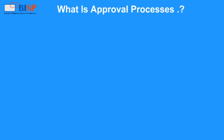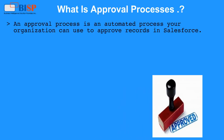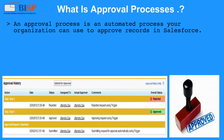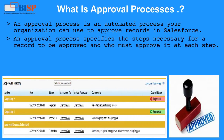What is an approval process? An approval process is an automated process your organization can use to approve records in Salesforce. An approval process specifies the steps necessary for a record to be approved and who must approve it at each step.